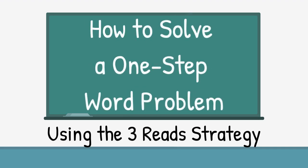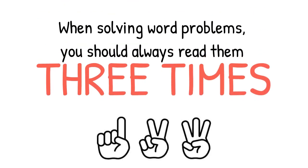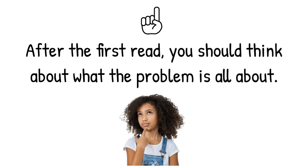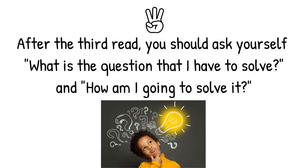How to solve a one-step word problem. When solving word problems, you should always read them three times. After the first read, you should think about what the problem is all about. After the second read, you should underline or highlight all of the important information. After the third read, you should ask yourself: what is the question that I have to solve and how am I going to solve it?